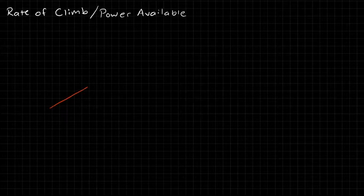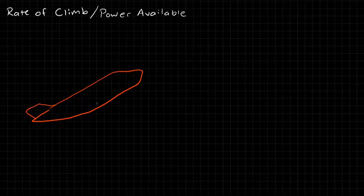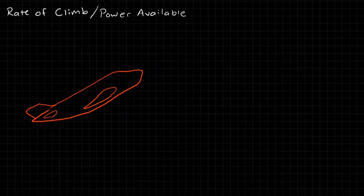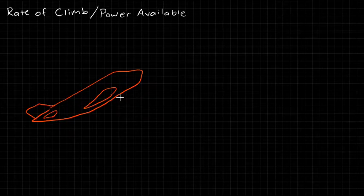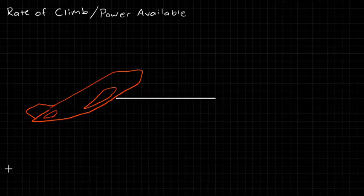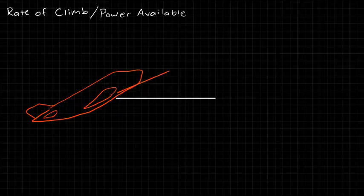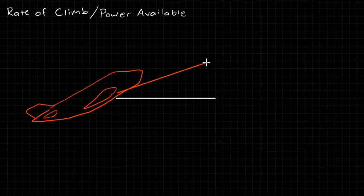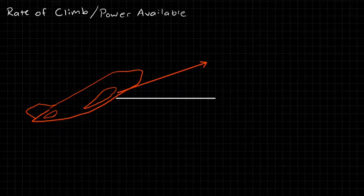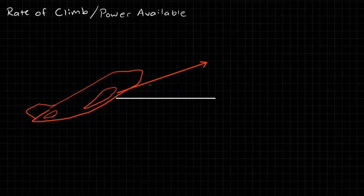Let's imagine we have our aircraft, and we're going to put it at a climb angle. So let's draw the wings. We have an aircraft, and here's the horizontal. Now what we're going to say is that the aircraft is not traveling horizontal. Instead, the aircraft is moving at a velocity that is oriented at some angle from the horizontal, and we're going to call this angle the climb angle. So our aircraft is climbing.